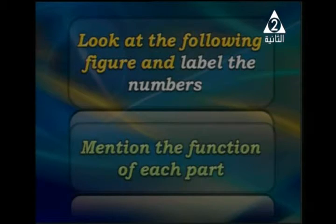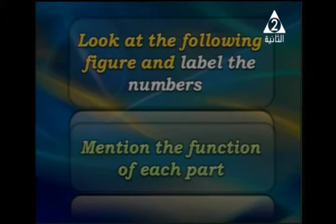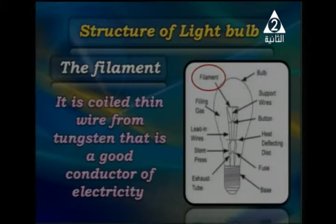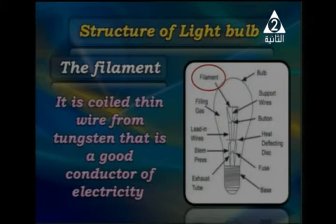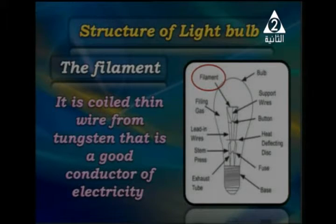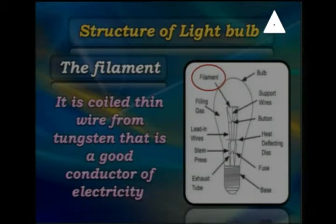Looking at the structure of the light bulb: the filament is the main part. It is a coiled thin wire from tungsten, which is a good conductor of electricity and also conducts heat energy very well. This makes it a special and important component.